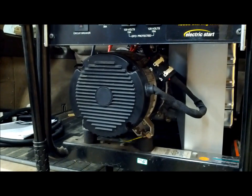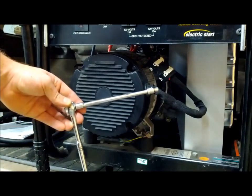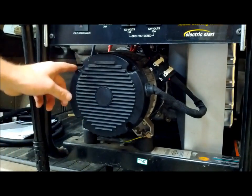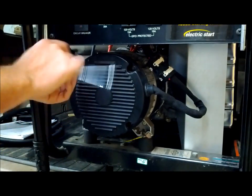Next we're going to remove that black cover. We're going to do that by taking a quarter inch ratchet, extension, and a seven millimeter socket. We're going to remove these four screws around the outer cover here to gain access.